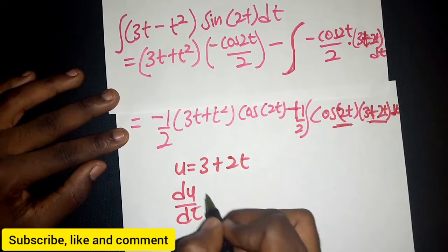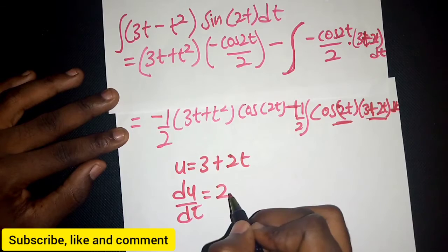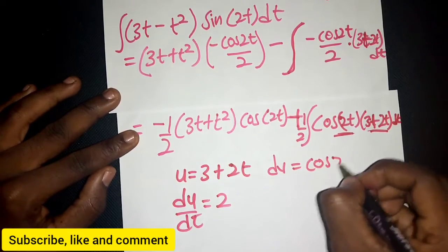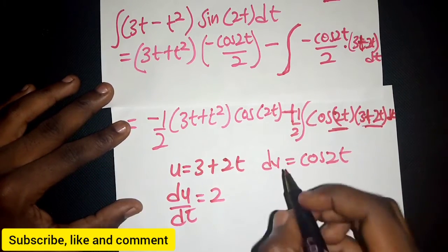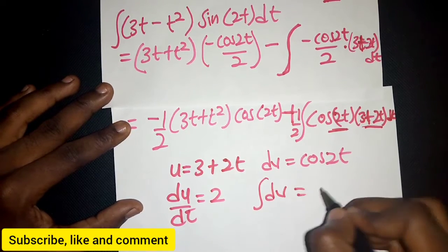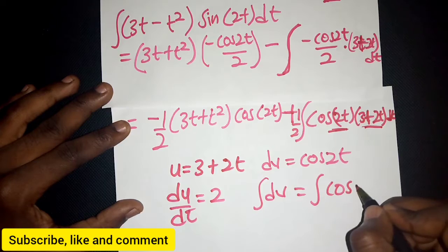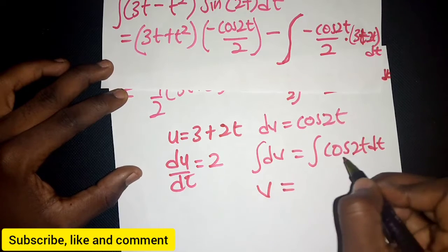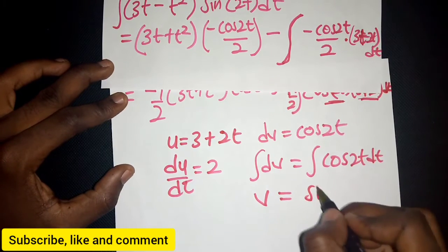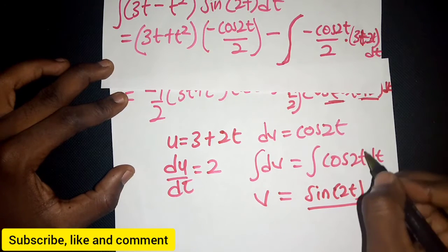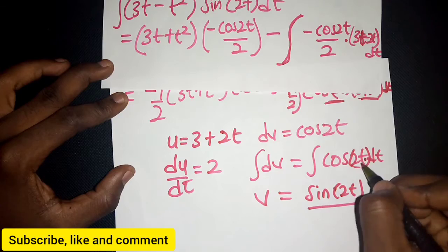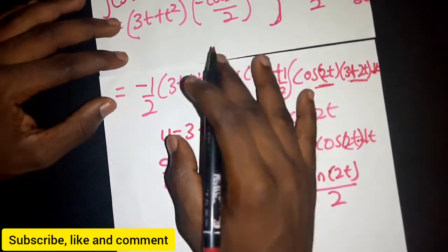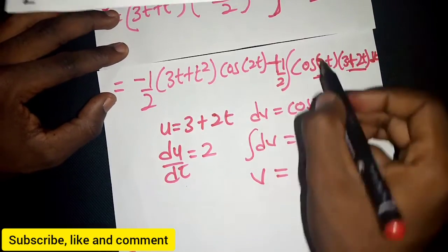For the second integration by parts: u = 3 + 2t, so du/dt = 2. And dv = cos(2t) dt. Integrating cos(2t), we get v = sine(2t)/2, since we divide by the derivative of 2t which is 2.